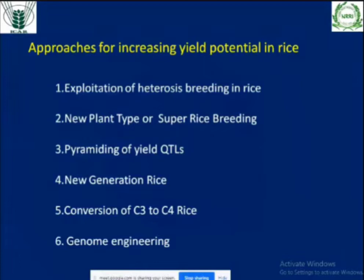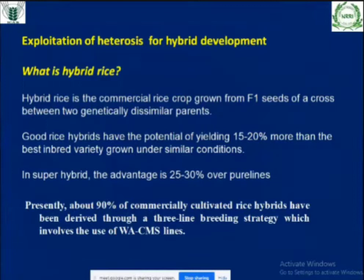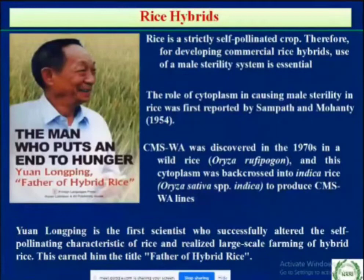I will be covering how to increase yield potential through heterosis breeding or hybrid rice, new plant type or super rice breeding, pyramiding of yield QTLs, new generation rice, conversion of C3 to C4, and genome editing. A hybrid is the first filial generation of a cross which has commercial value — it should have 15 to 20 percent above the best inbred line, and a super hybrid should have 25 to 30 percent over the best. In rice, a predominantly self-pollinated crop, we have to convert the system to a cross-pollinated one.